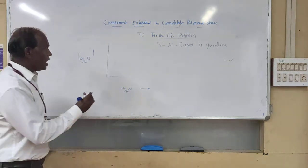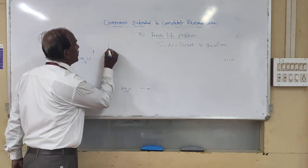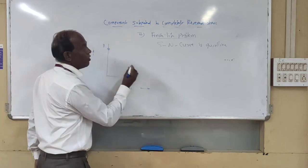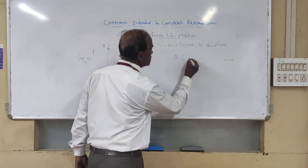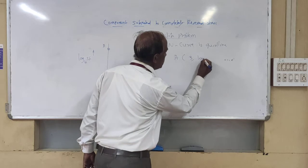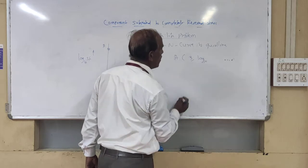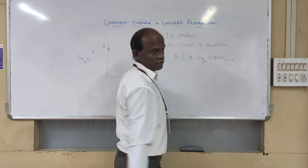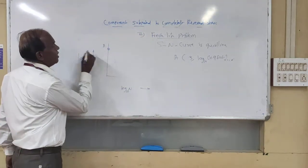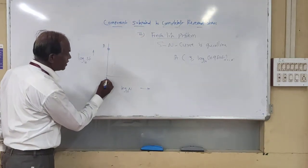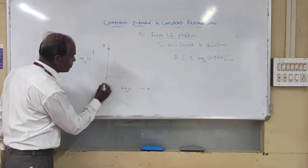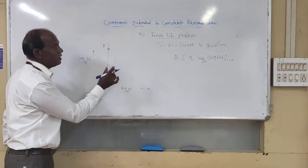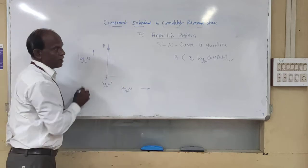Now we have to plot the graph. The coordinates of point A: point A coordinates are (3, log to the base ten of 0.9 times SUD), which is log to the base ten of 0.9 times ultimate design stress. So the x-coordinate of point A is 3.